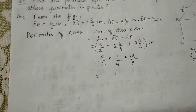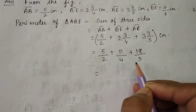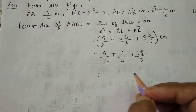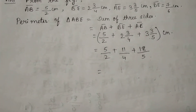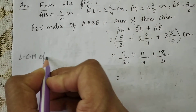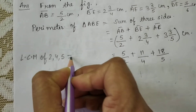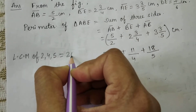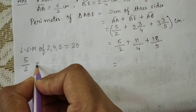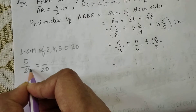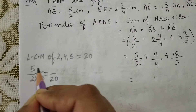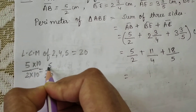Now I can see these three are unlike fractions, so we need to convert them to like fractions with a common denominator. We find the LCM of 2, 4, and 5, which equals 20. Then convert each fraction to an equivalent fraction with denominator 20. For 5/2: 2×10 = 20, so multiply numerator by 10 to get 50/20.